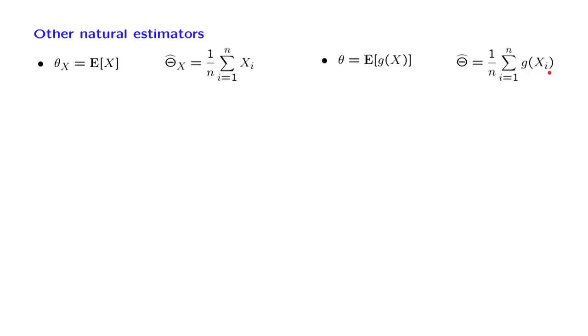We use those independent samples, we average them, and by the weak law of large numbers, this quantity, as n goes to infinity, will converge in probability to the expected value of g of X.